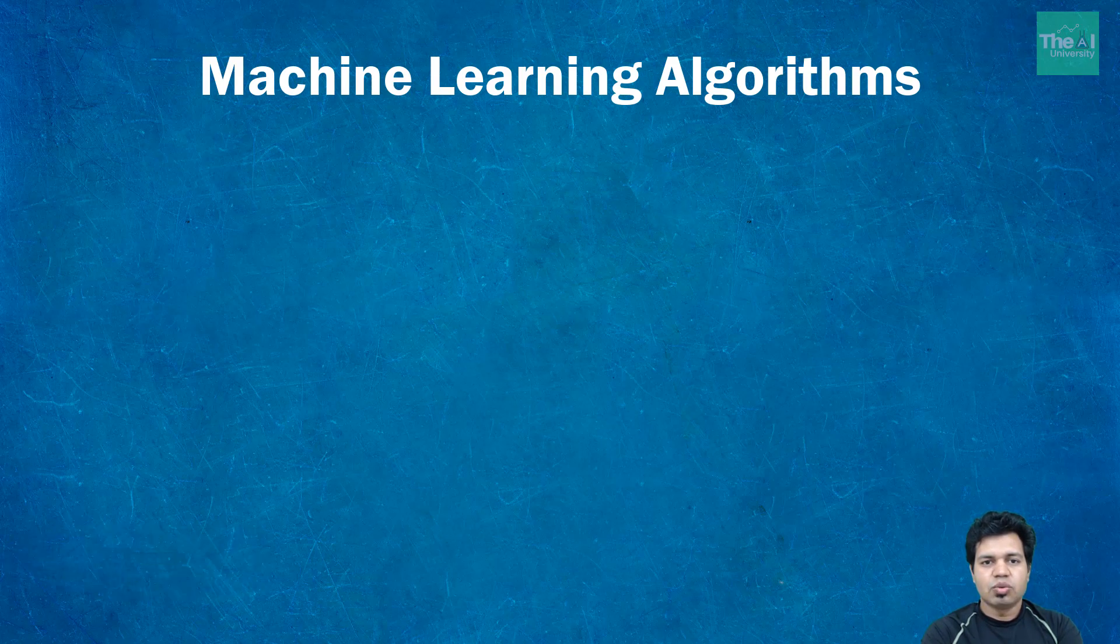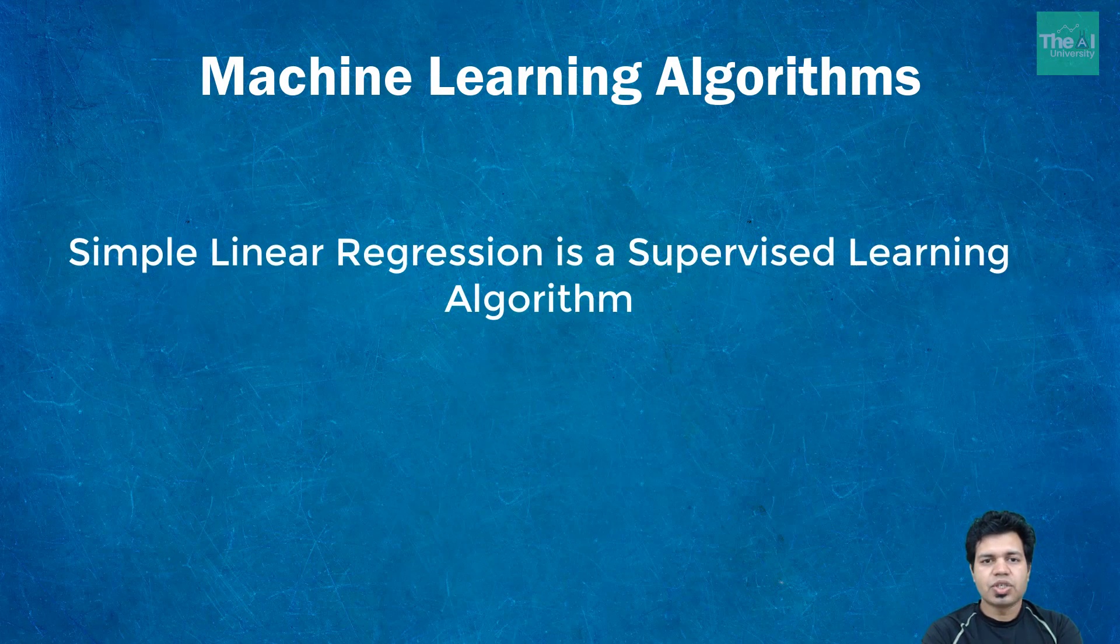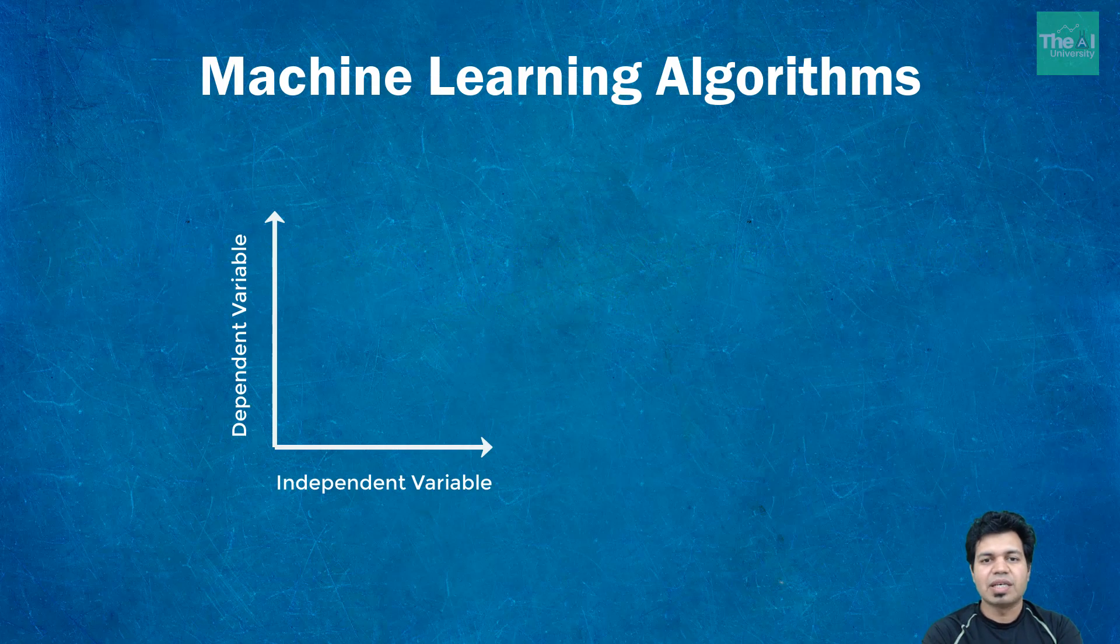Now let's quickly move on to the intuition behind simple linear regression. So what is simple linear regression? Well, it's a supervised learning algorithm in which the relationship between dependent and independent variable can be expressed in a straight line. Dependent variable is the variable that needs to be estimated and predicted.